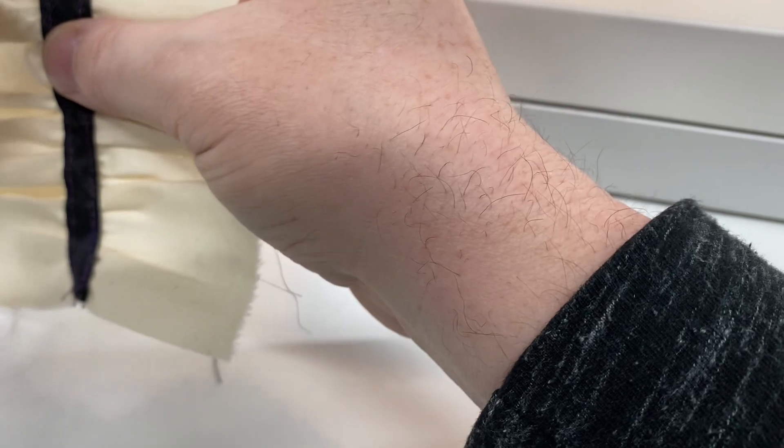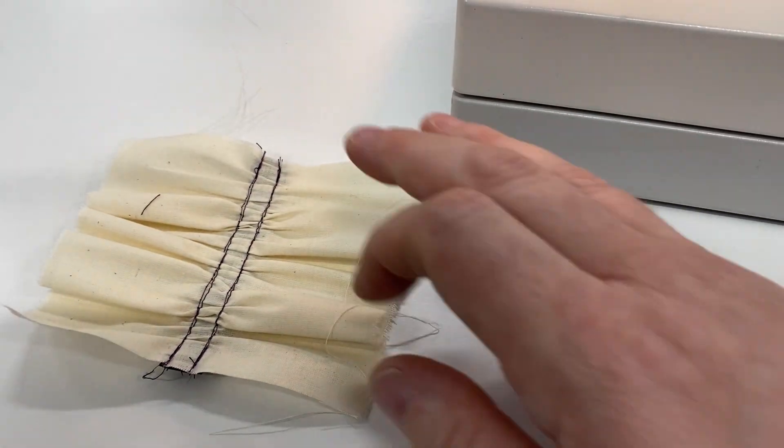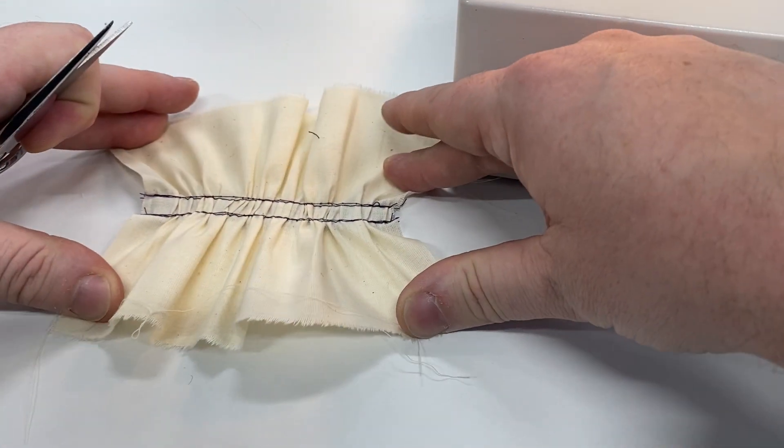Having untrimmed threads in your sampler will count off. There we go. That's how that should look when you're done.